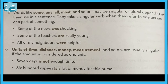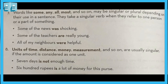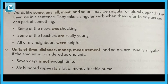Seventh rule: words like some, any, all, most, and so on may be singular or plural depending on their use in a sentence. It depends on the context. They take a singular verb when they refer to one person or a part of something, and a plural verb when they refer to more than one person or thing.